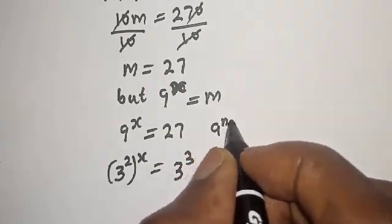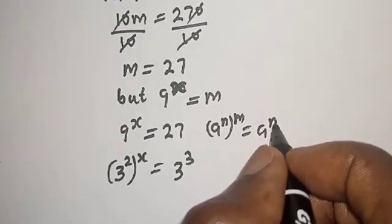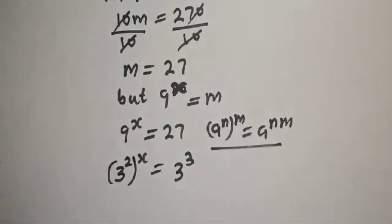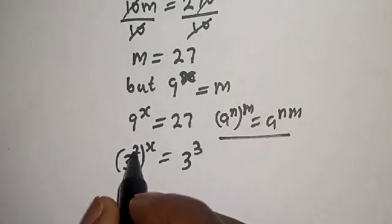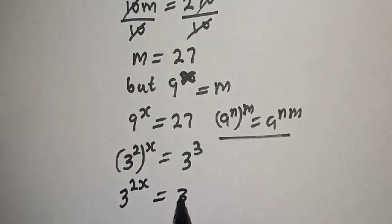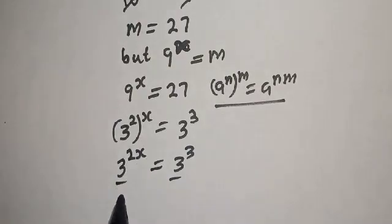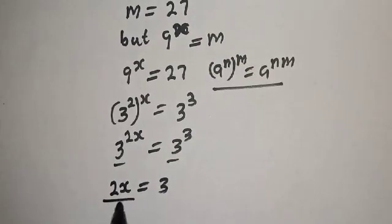Using the rule that a raised to power n, raised to power m equals a raised to power n times m, we have 3 raised to power 2 times s — that is 3 raised to power 2s — equals 3 raised to power 3, which is 27. They have the same base 3, and the exponent 2s is equal to 3.